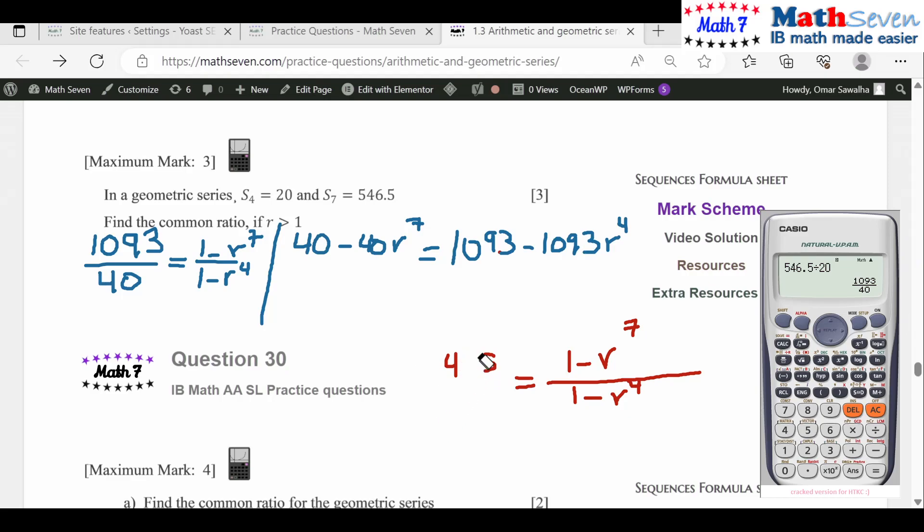Let's take this here and take that here. So you will have 1093 minus 1093r^4 minus 1053 equals to zero.